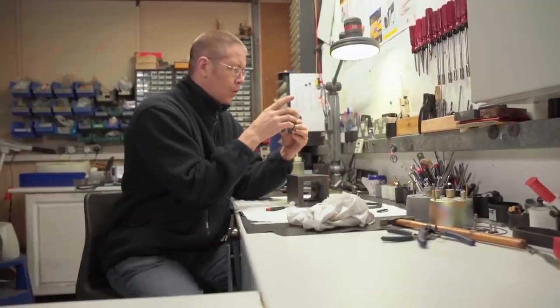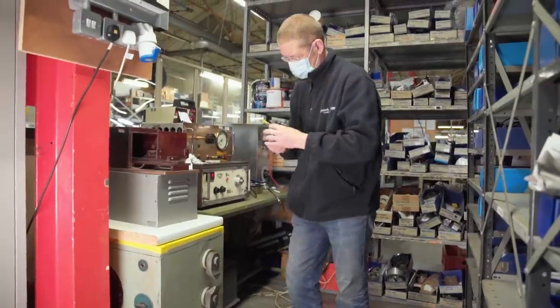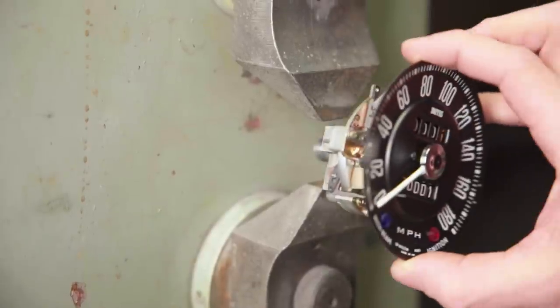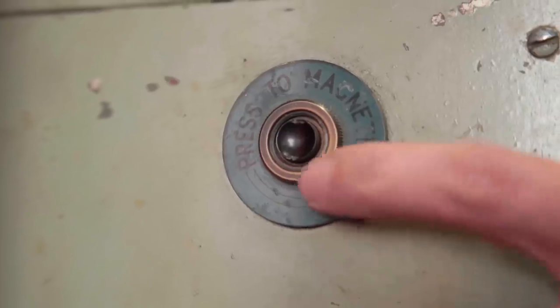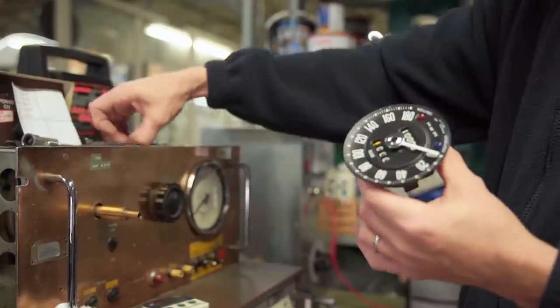The next step is calibration. I'm going to put the speedometer onto our specialist magnet charger. It pulses a large amount of energy across the magnet and charges it up like a battery.